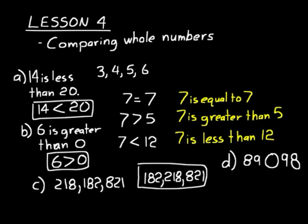Look at practice problem D. Compare those two numbers and write the appropriate mathematical symbol in that little circle in between the two numbers. There's 89 and 98. Well, just think about it: 89, 90, 91. 89 is going to be less than 98, and so we need to put a less than symbol in there to represent 89 is less than 98.